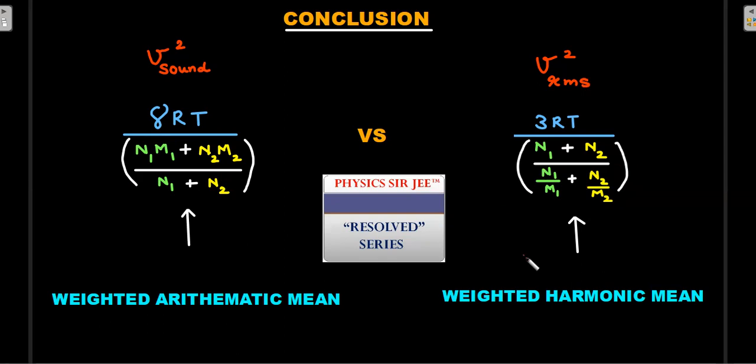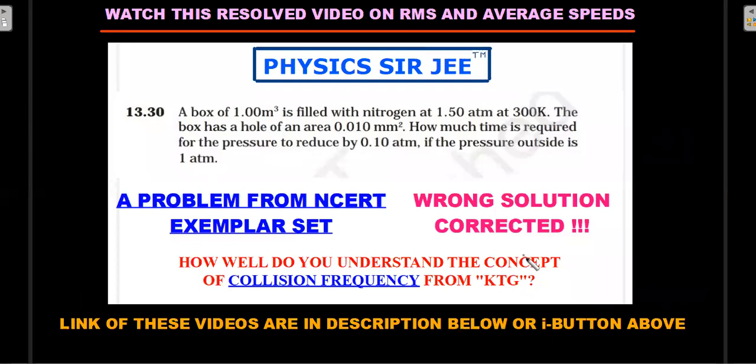Let's go and have a look at the practice problems as usual in any Resolved video. Before I do that, I would request you and alert you, if you are new to this channel, to watch a Resolved video - an old one I think two years from this video back. I have made a video on the NCERT question which highlighted the importance of rms and average speeds and their difference. There was a wrong solution that was there in the NCERT exemplar set which I corrected and also introduced the concept of collision frequency in an elaborate manner. Link of these videos are in the description below or the i button above.